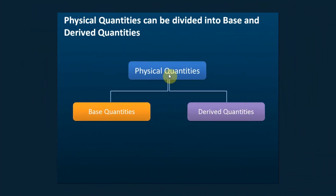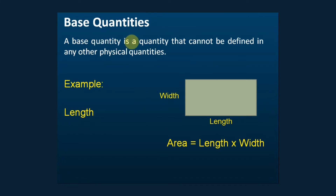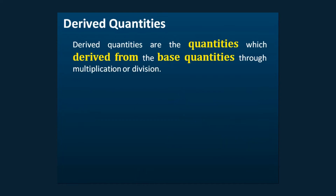There are two types of physical quantities: the base quantities and the derived quantities. We learned that a base quantity is a quantity that cannot be defined in terms of any other physical quantities. Now let's continue with derived quantities. By definition, derived quantities are quantities which are derived from the base quantities through multiplications or divisions.